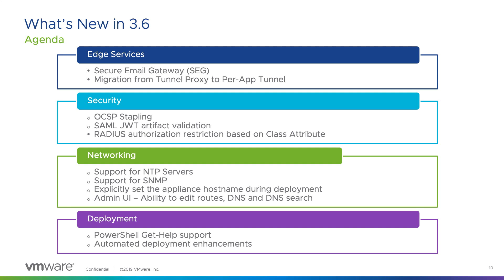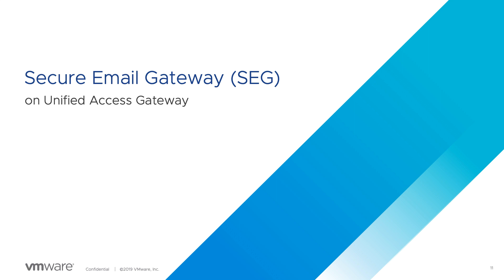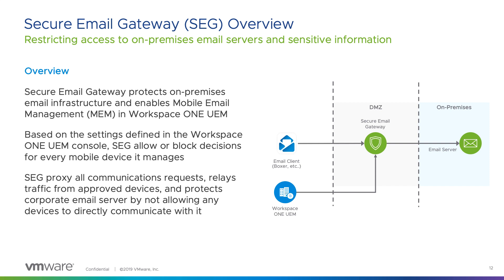To get started, let's take a look at the new edge service: Secure Email Gateway. Secure Email Gateway, also known as SEG, helps to protect on-premise email infrastructure by proxying all communication requests. It enables mobile email management in Workspace ONE UEM, allowing IT administrators to manage policies to enforce and restrict access.